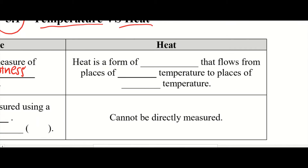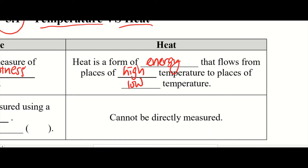On the other hand, let's look at heat. We learned in the previous few topics on energy that one of the types of energy is heat energy. So heat is a form of energy that flows — energy can flow, can move from one place to another — that flows from places of high temperature to places of low temperature. It always flows from hot places, high temperature places, to low temperature places.